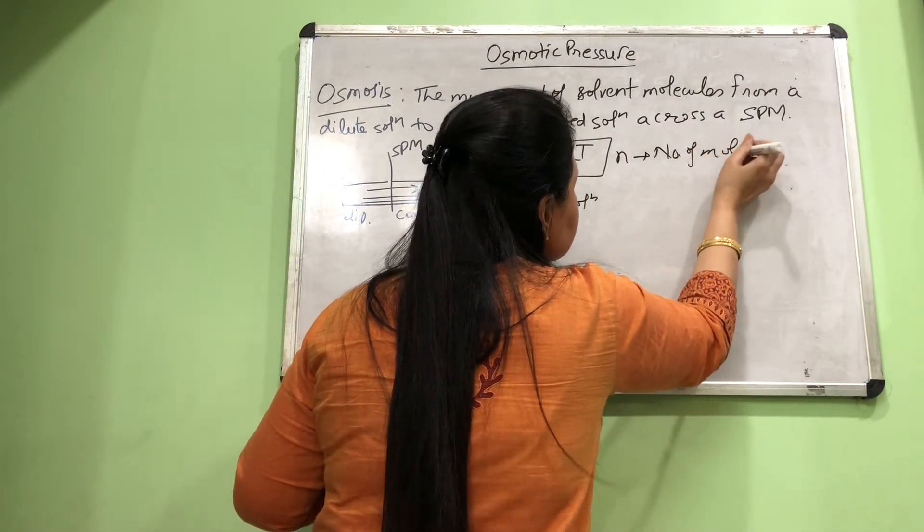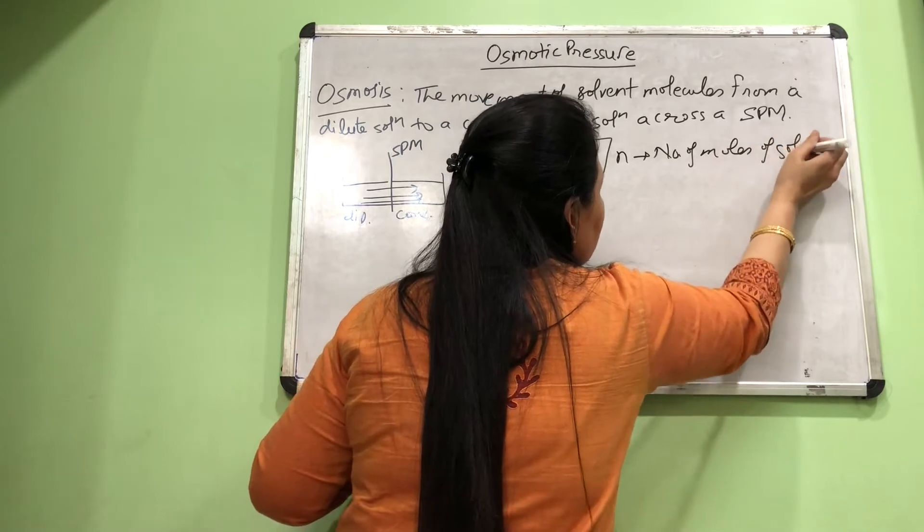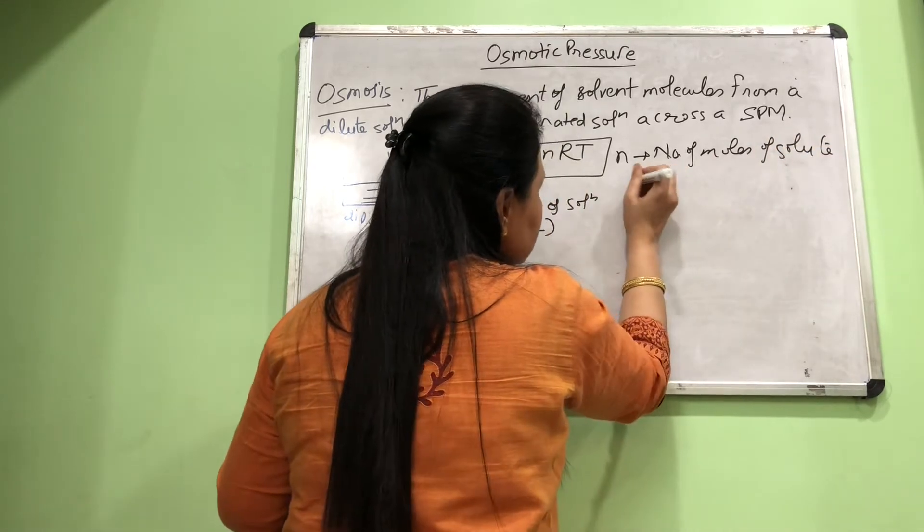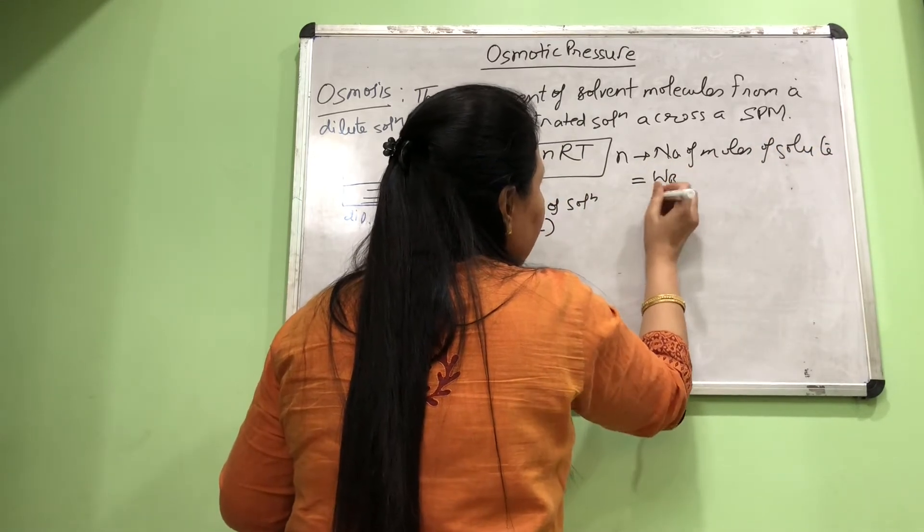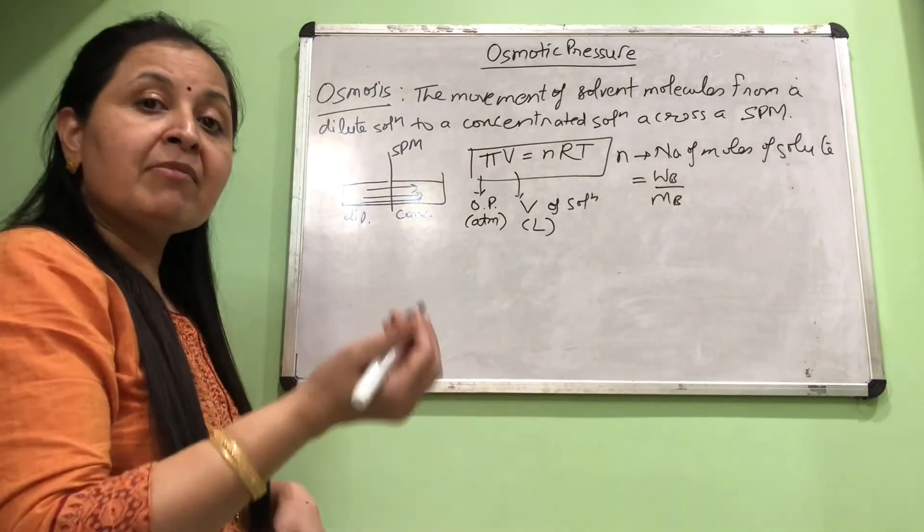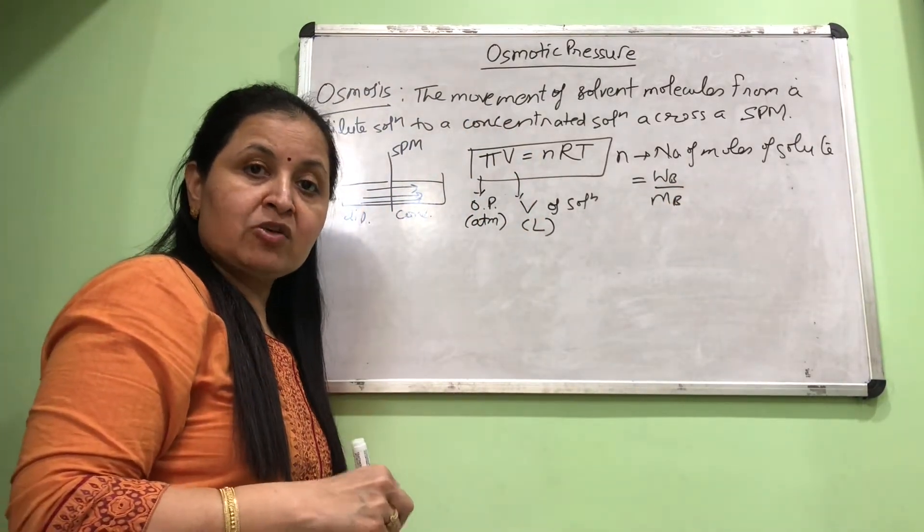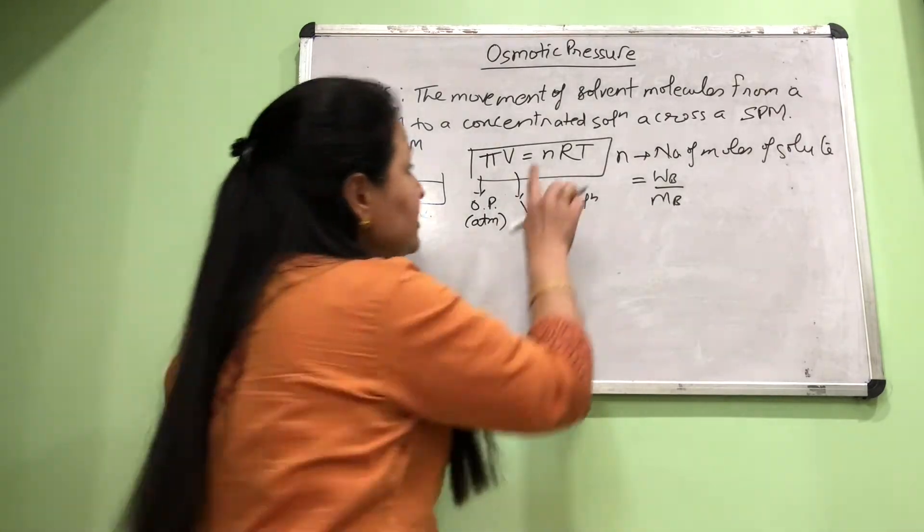π is the osmotic pressure of the solution in atmosphere. V is the volume of solution and it should be in liters. n is the number of moles of solute, which is also given by w_B/M_B. That is, you calculate number of moles as given mass of solute divided by molar mass of solute.